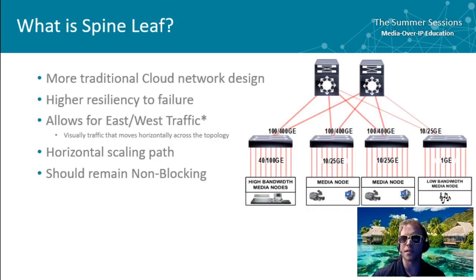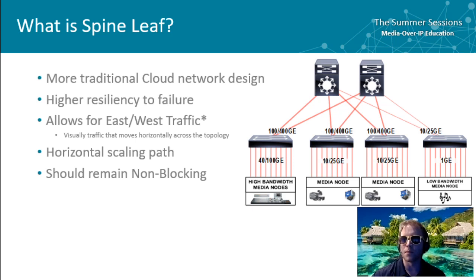In a spine-leaf system, which is more like your traditional cloud network architecture, there's higher resiliency to some failures and it allows for east-west traffic flow — meaning traffic moves horizontally across the topology. It's almost infinitely scalable horizontally. When you build these systems, the most important thing is to maintain that they are non-blocking.